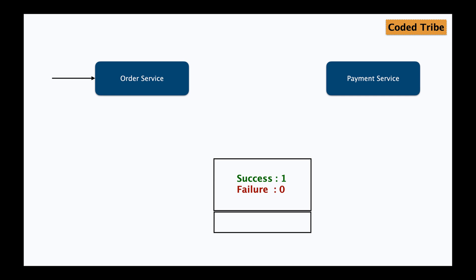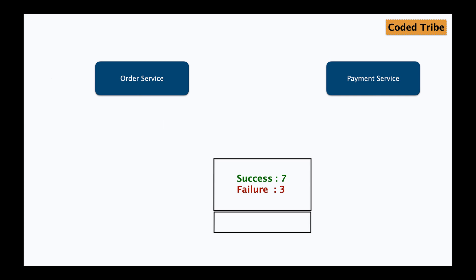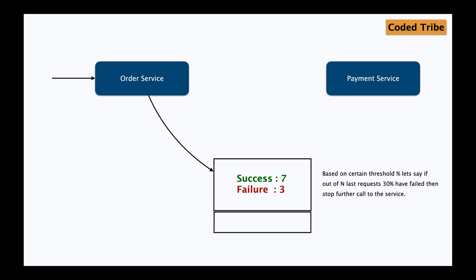So the success count increments with each successful response. Now let's say we have had 10 transactions and out of those, 3 have failed. When another request comes to the order service, it goes to the request interceptor, which checks based on a configured threshold percentage whether the call should be allowed to the payment service or not. If we configure it so that if 30 percent of the last 10 transactions were failures the call should be blocked, then since 3 out of 10 failed (reaching the 30% limit), no more requests will be allowed to the payment service.